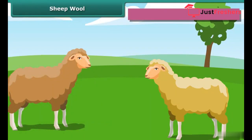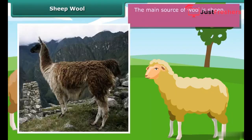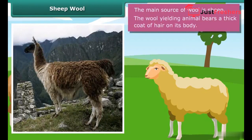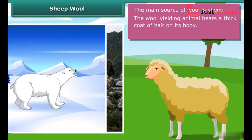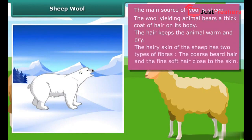The main source of wool is sheep. The wool-yielding animal bears a thick coat of hair on its body. The hair traps air, and since air is a poor conductor of heat, the hair keeps the animal warm and dry, allowing it to live in cold and harsh climates.